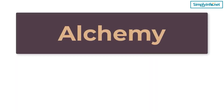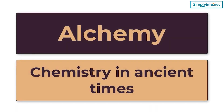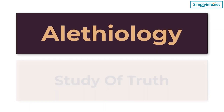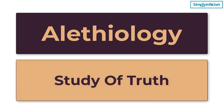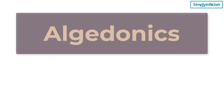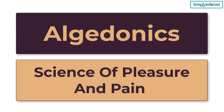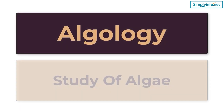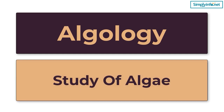Alchemy – Chemistry in ancient times. Aletheology – Study of truth. Algedonics – Signs of pleasure and pain.